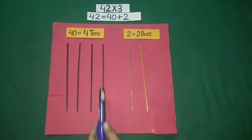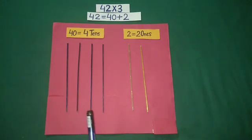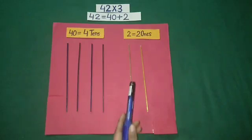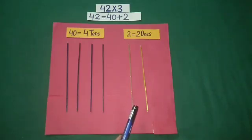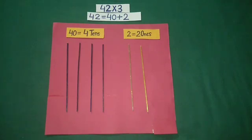Here, 1 blue stick is equal to 10. So we have 10, 20, 30, 40. And 1 yellow stick is equal to 1. So 40, 41, 42.